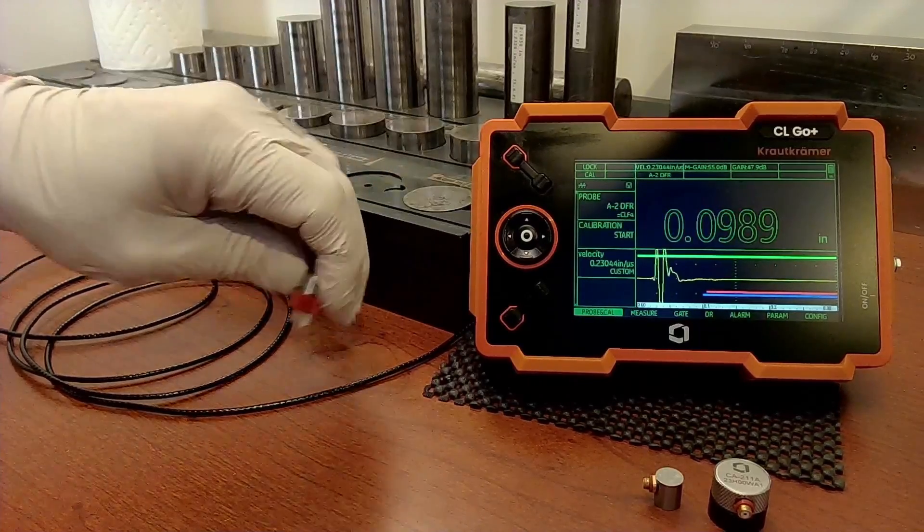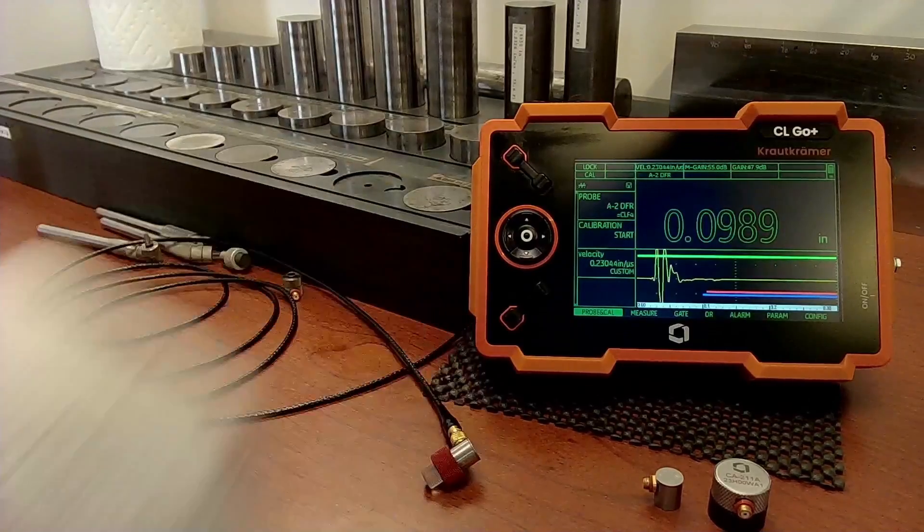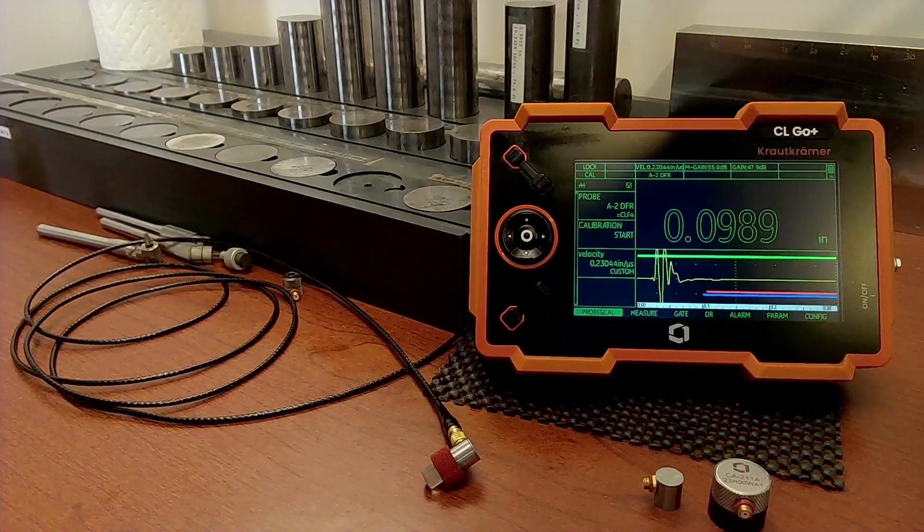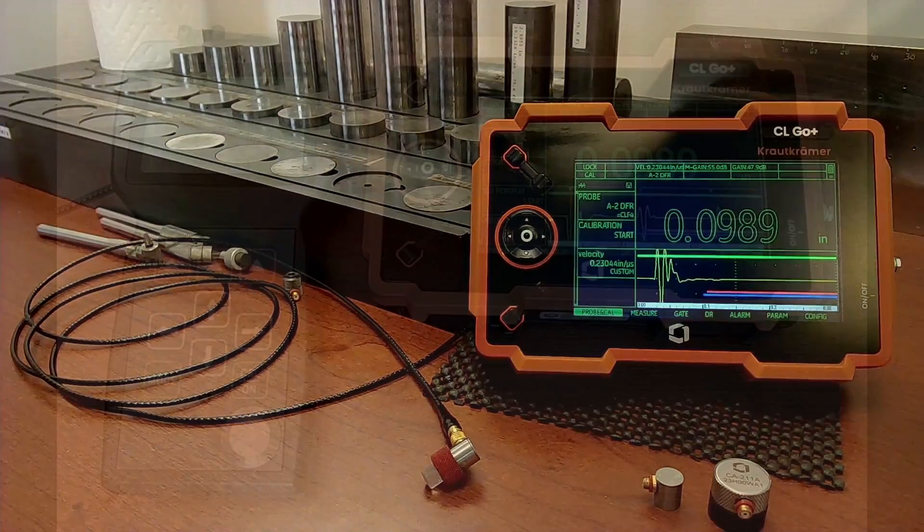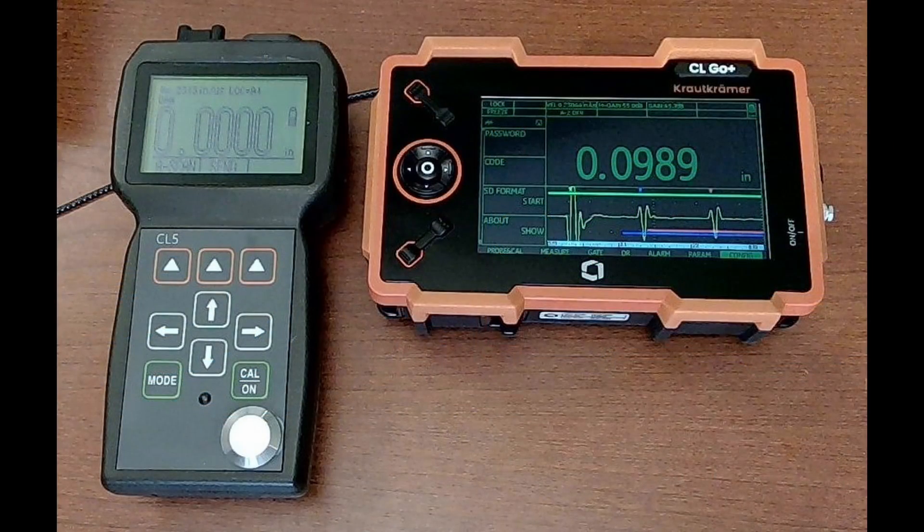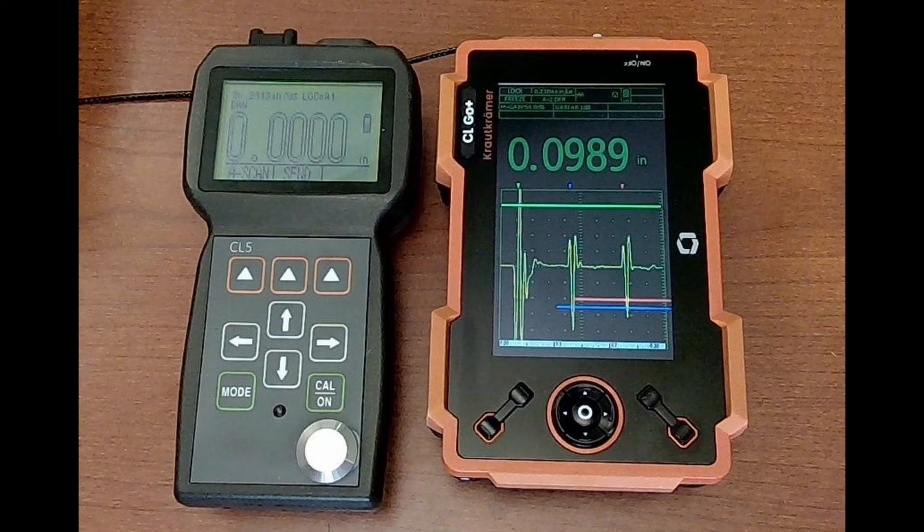So just that simple. Now for those of you who fondly remember the CL5 instrument, you might be concerned about form factor. Here's a comparison of the CL5 and the CL Go side by side. And if you like the vertical orientation or portrait orientation of the display, you can certainly do that on the CL Go.